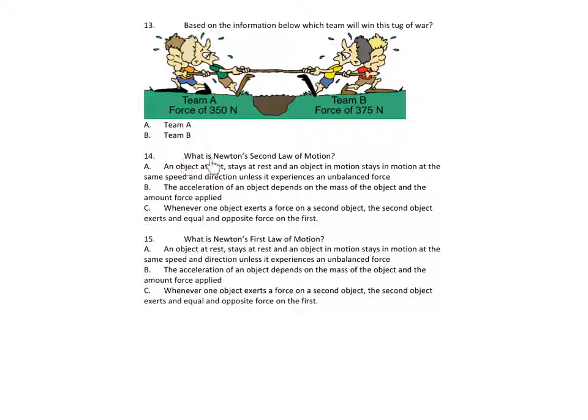Number 14. What is Newton's second law of motion? A. An object at rest stays at rest, and an object at motion stays in motion at the same speed and direction unless it experiences an unbalanced force. B. The acceleration of an object depends on the mass of the object and the amount of force applied. C. Whenever one object exerts a force on a second object, the second object exerts an equal and opposite force on the first.